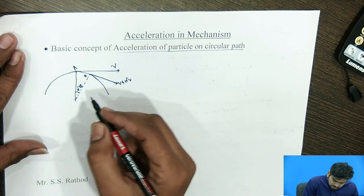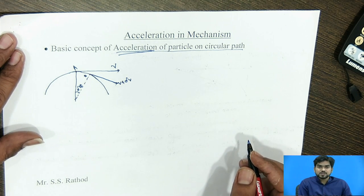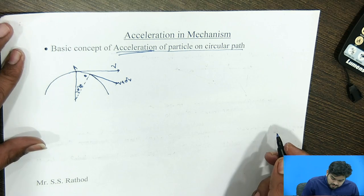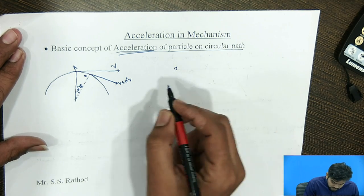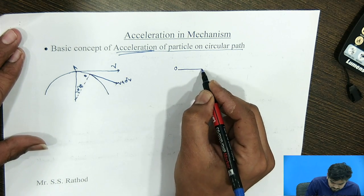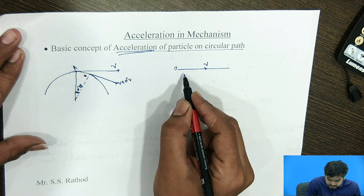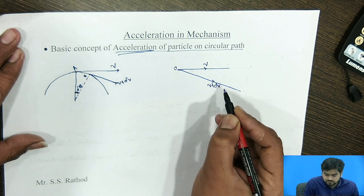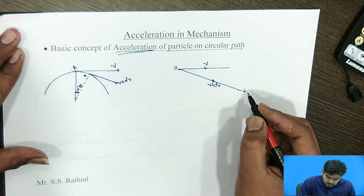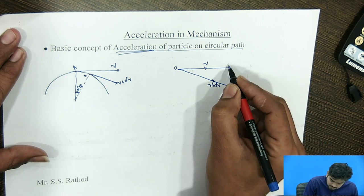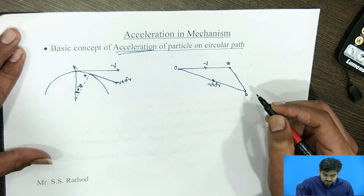We have to find out the acceleration. Acceleration is nothing but the rate of change of velocity with respect to time. The change in velocity is obtained from the velocity triangle. Consider point O as a pole — this gives velocity V. After some interval of time, it takes angle delta theta and the new velocity is V plus delta V in magnitude as well as in direction. Joining AB gives us the change in velocity.